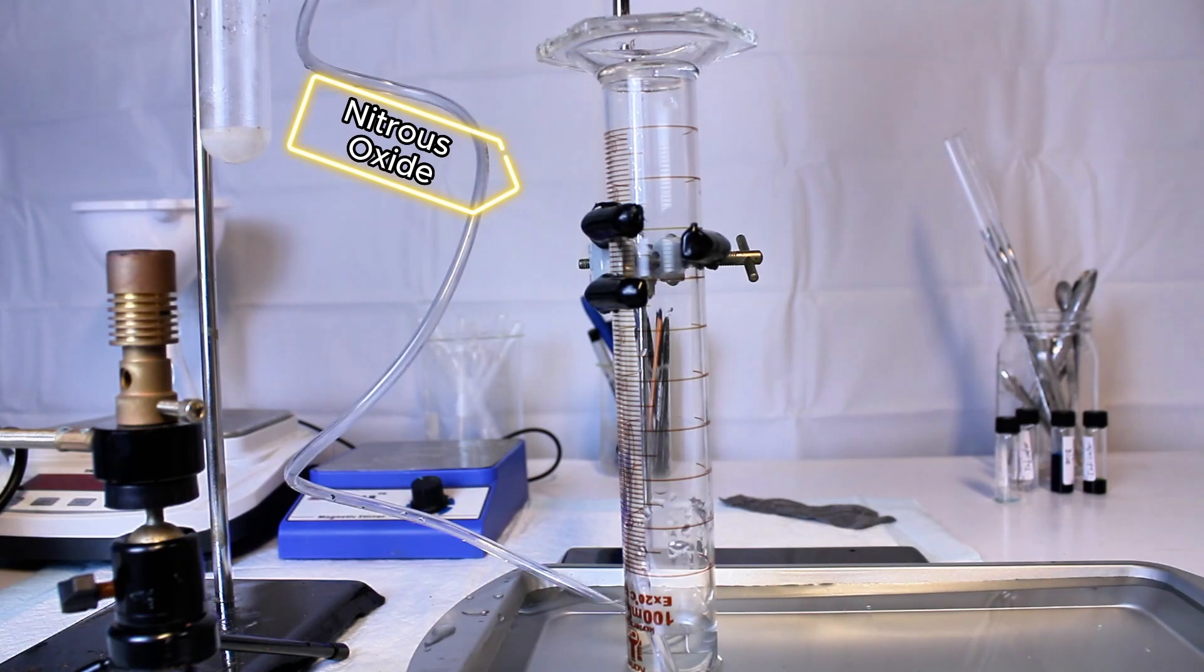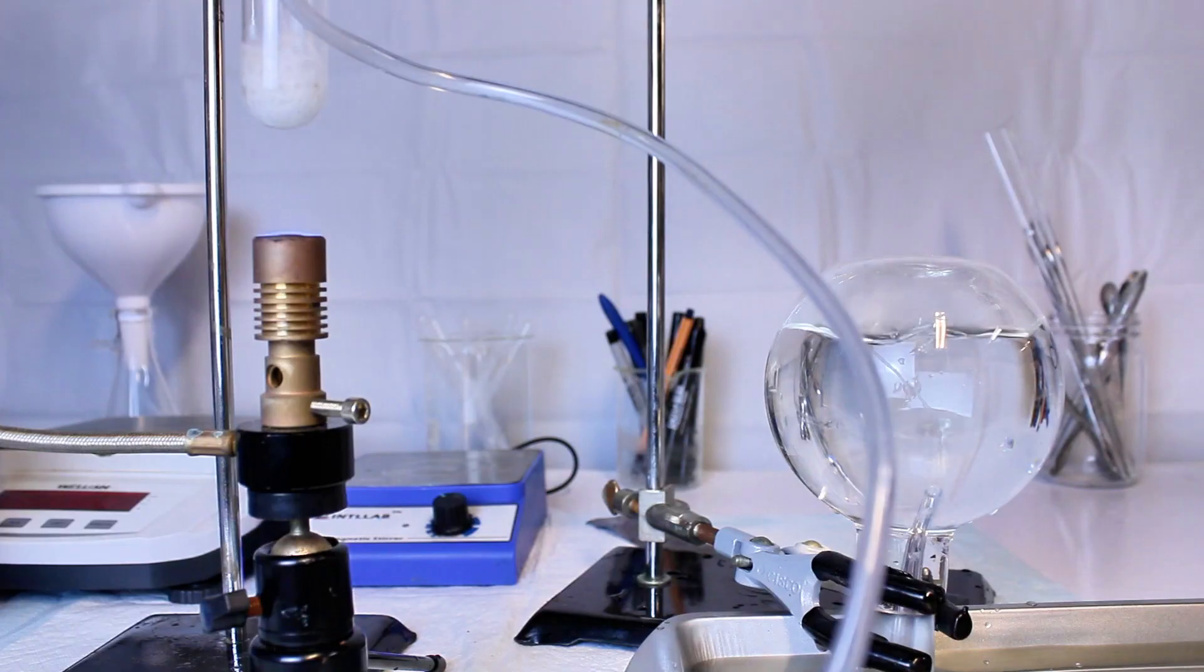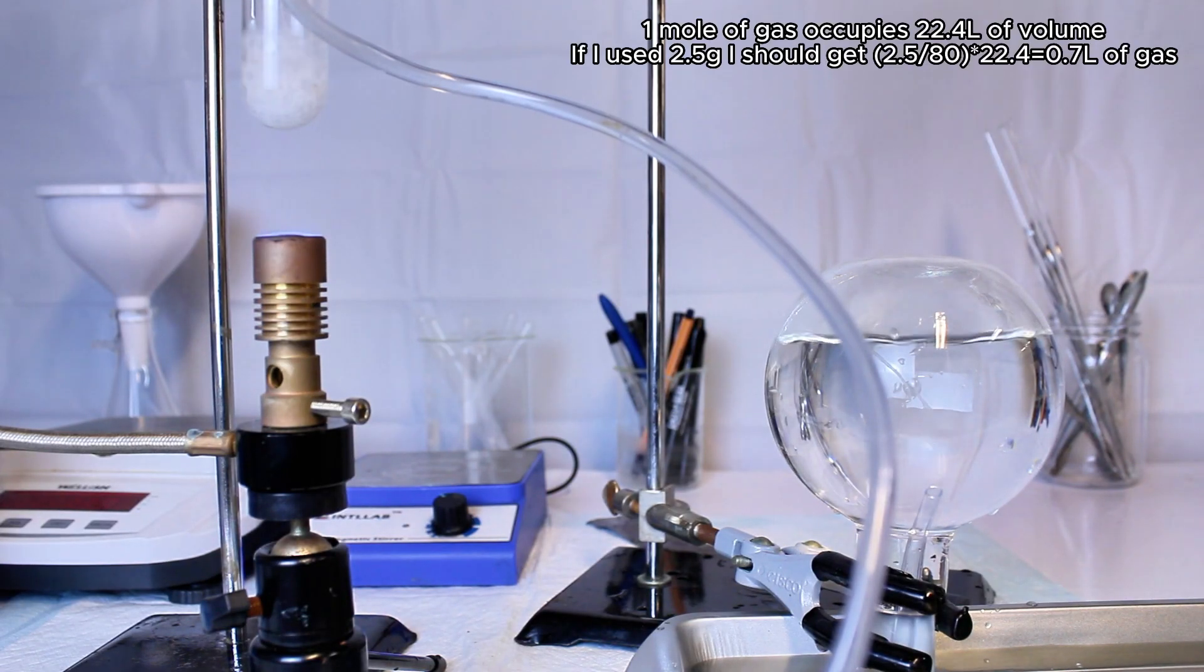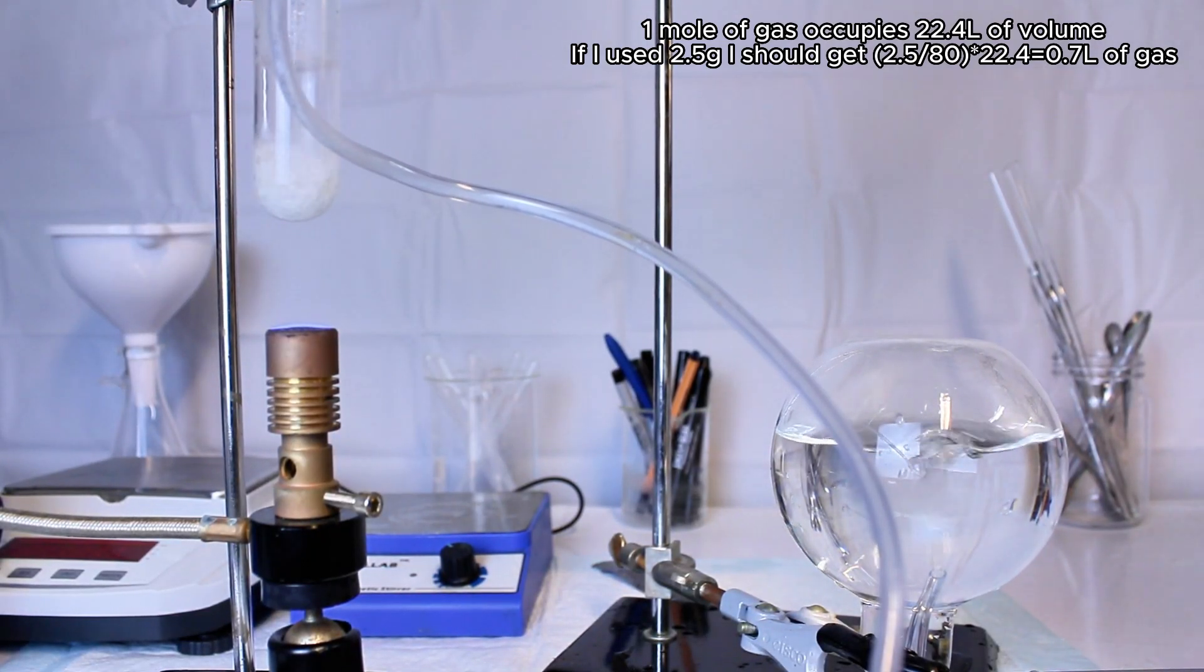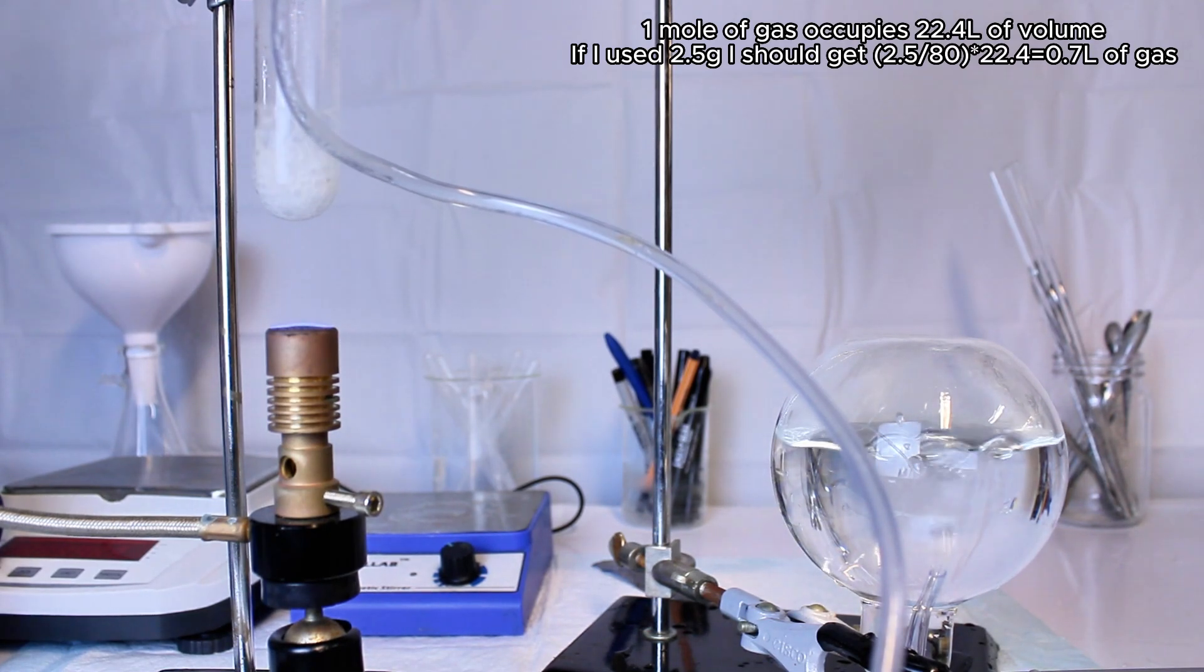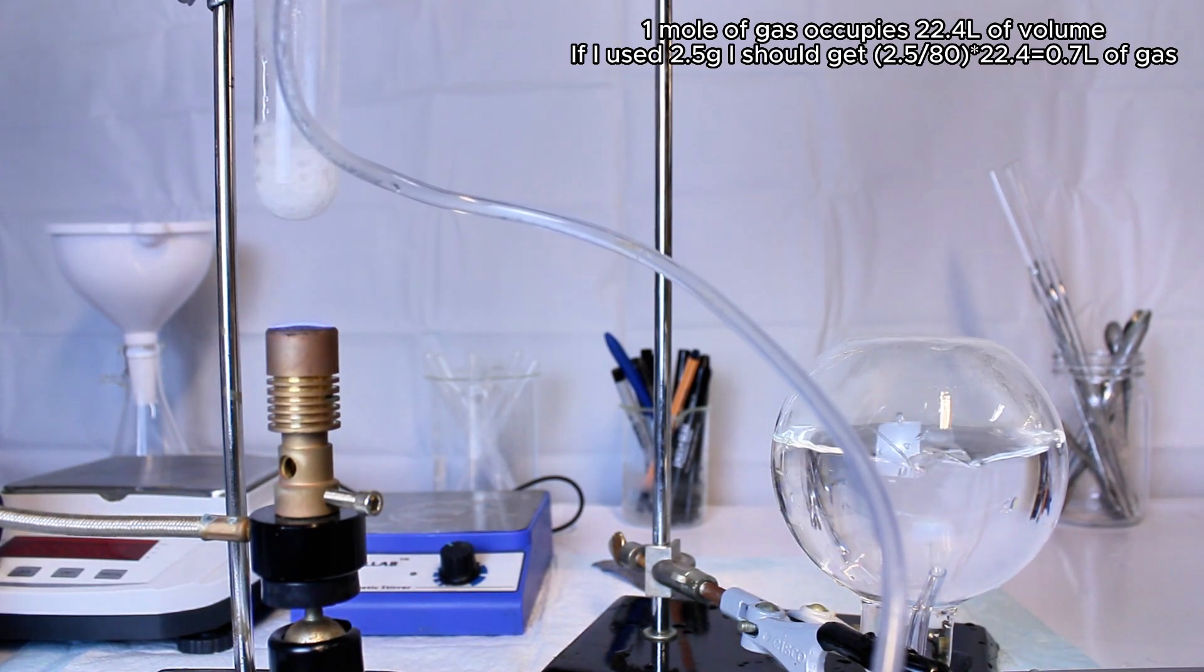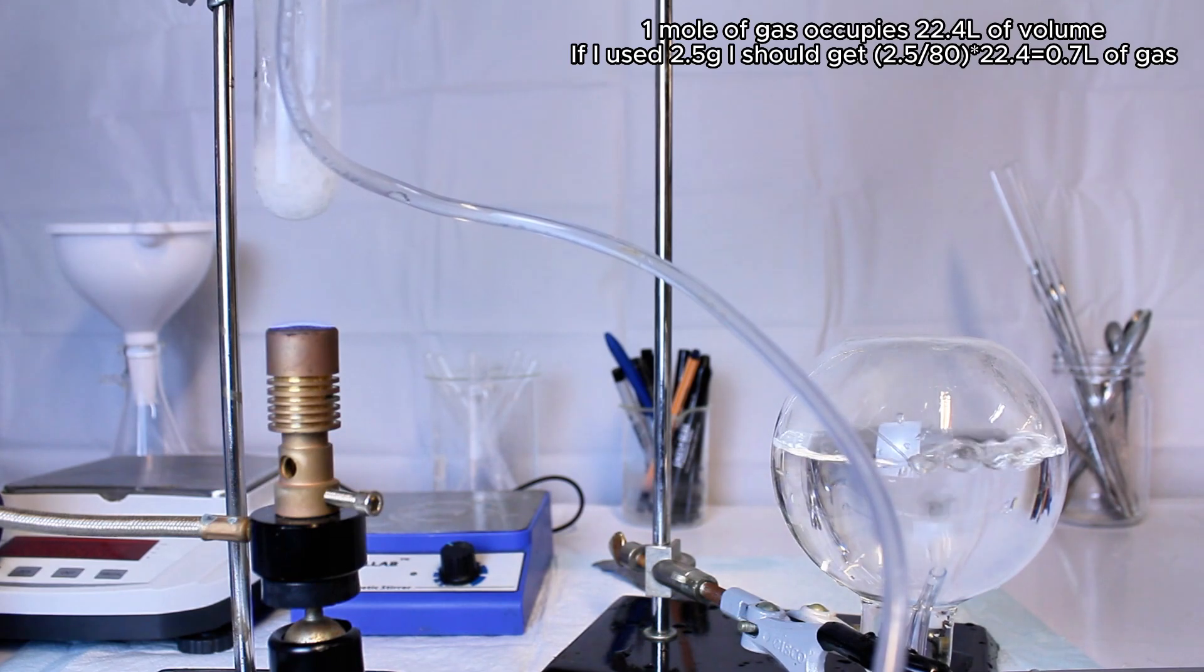In any case, that's the entire process, but I went ahead and set this back up with a 500ml boiling flask because I wanted to see how much gas this small amount of ammonium nitrate would make. As a side note, one mole of any gas will occupy 22.4 liters of volume, and so if I use 2.5 grams of ammonium nitrate, I could get around 0.7 liters of gas total.